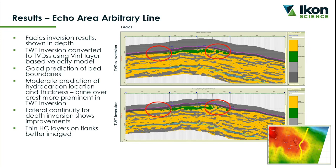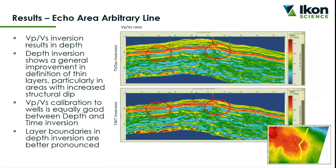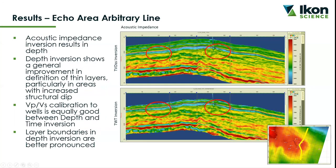We see better lateral continuity, better and more realistic predictions of hydrocarbons away from the wells, and an overall improvement from the depth-based inversion. Because elastic properties are tied to the facies images, we see a corresponding improvement in the elastic properties. The Vp/Vs shows good calibration to the wells and evidence of thin layers better resolved in the depth inversion. Similarly, we see improvements in vertical resolution in the acoustic impedance between the two inversions.